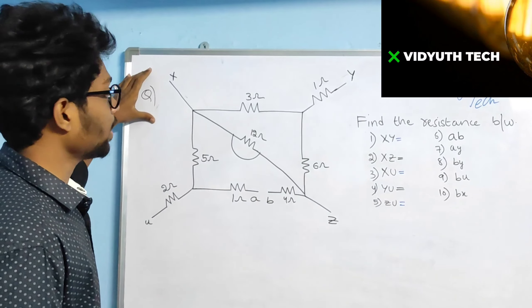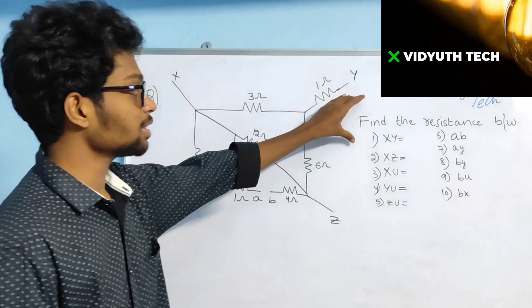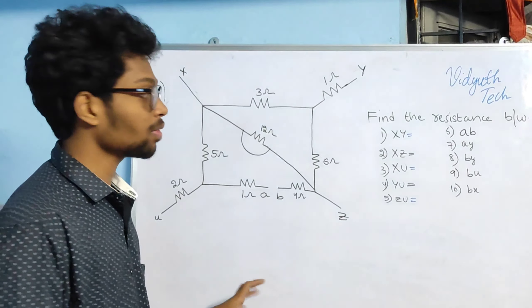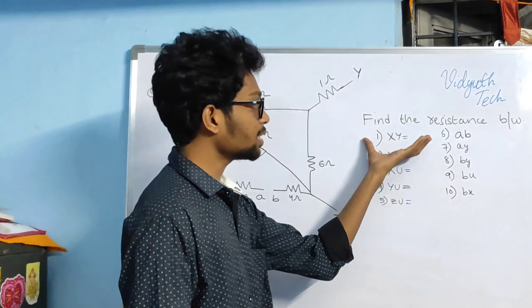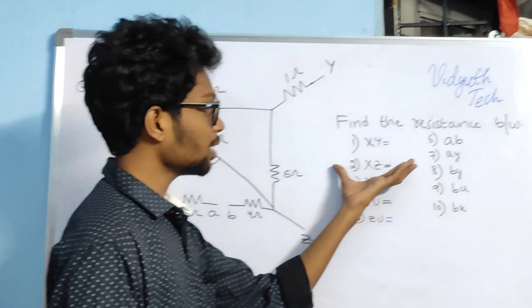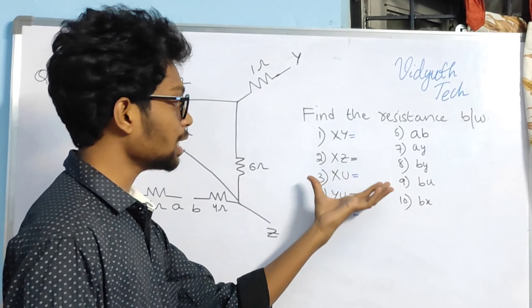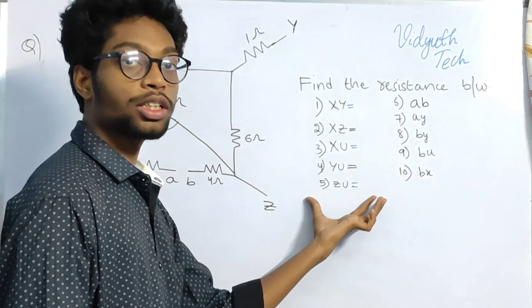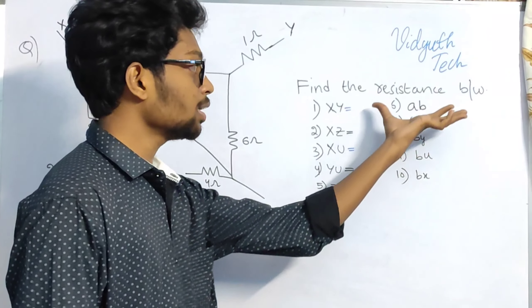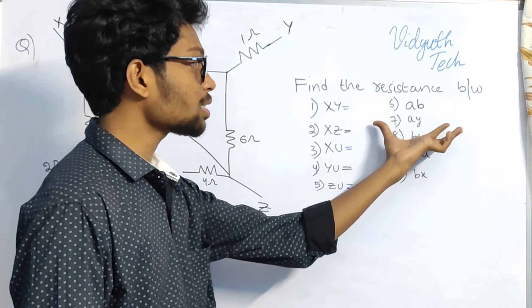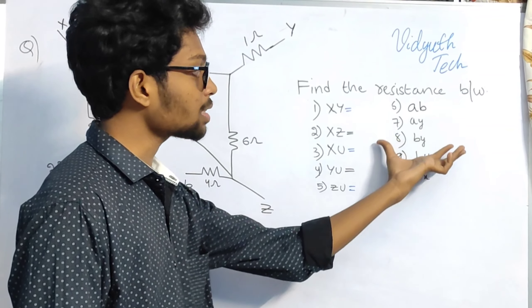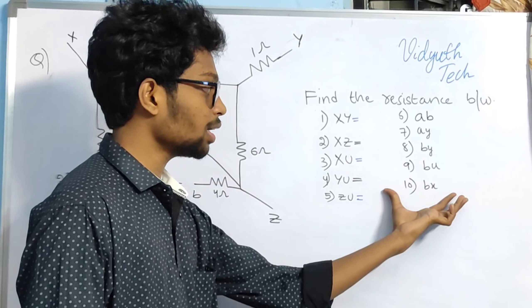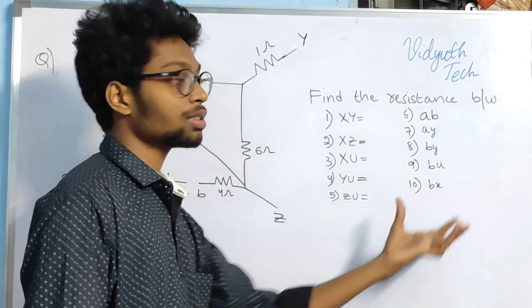We have to find equivalent resistance across the following terminals for this problem: XY terminals, XZ terminals, XU terminals, YU terminals, ZU terminals, AB terminals, AY terminals, BY terminals, BU terminals and BX terminals.